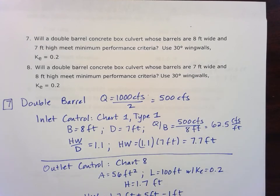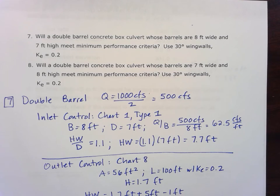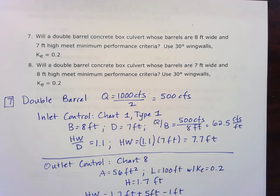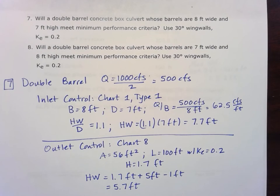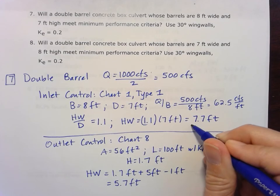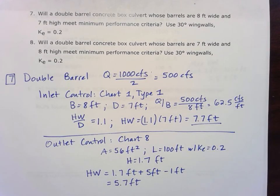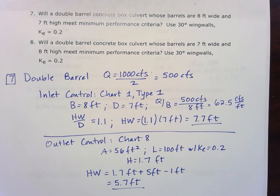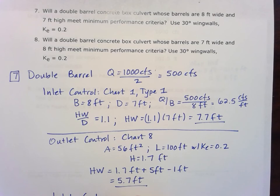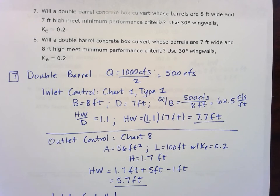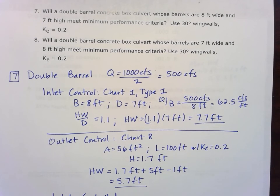And so we get 1.7 plus 5, 6.7 minus the 1, so 5.7 feet. Again, in the back of the book, I think it says 5.6 feet, so just off by that one-tenth there. But either way you look at it, we're comparing 7.7 feet for the inlet and 5.7 feet for the outlet. So that will be inlet controlled since that does have the higher headwater.